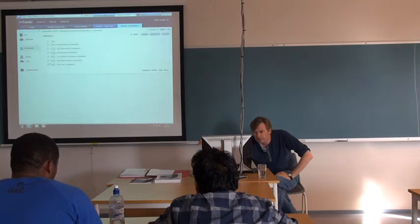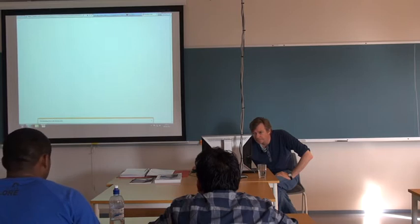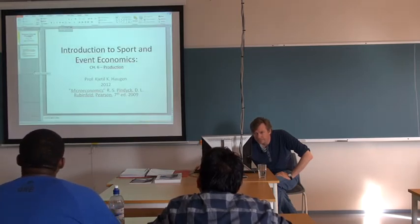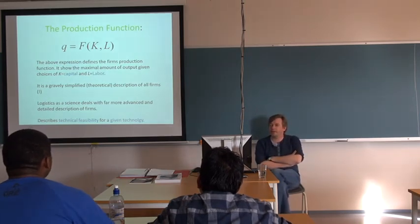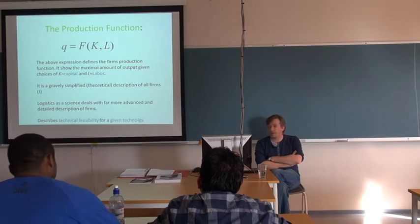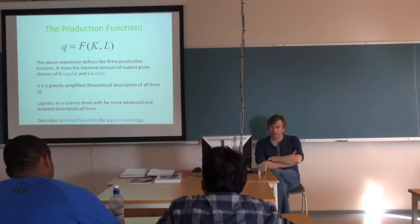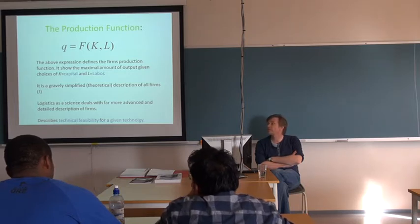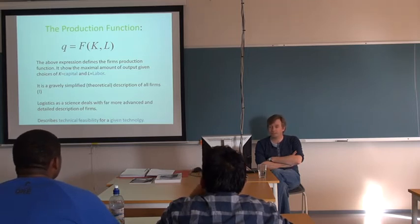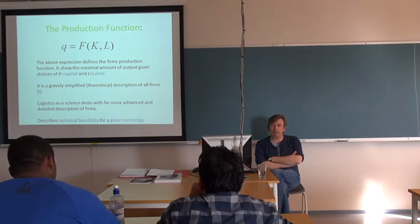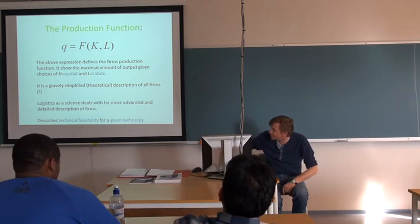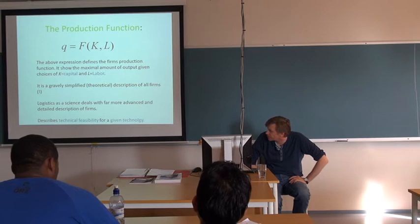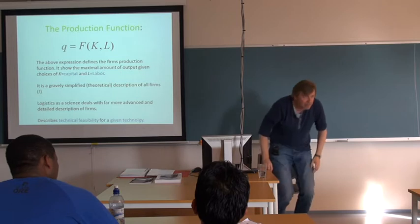Let's look at chapter six. This will be some repetition. If you recall from the course we had in event economics, we discussed various parts of economic theory. One part was the production economics part. In the production economics part, we introduced the production function. It's written on the top of this slide here: Q equals a function of K and L, where K is capital and L is labor. It is a gravely simplified theoretical description of all firms. Logistics as a science deals with a far more advanced and detailed description of firms.